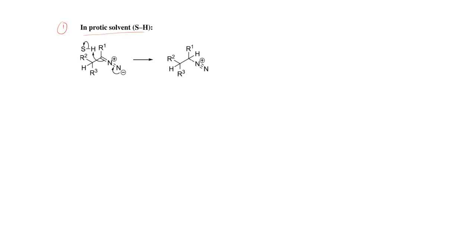If the reaction is carried out in protic solvent — such as alcohol (OH) — this is a protic solvent. Another protic solvent which can donate a proton easily, like thiol, is also a protic solvent. So there are different examples of protic solvents. When the reaction is carried out in protic solvent, this carbon atom will abstract a proton from the protic solvent.